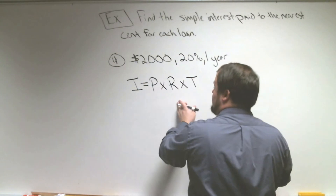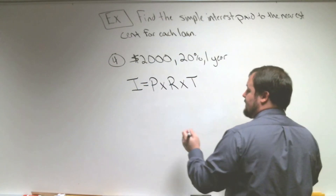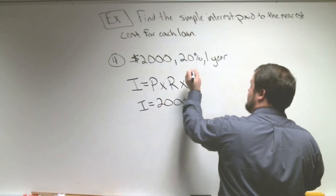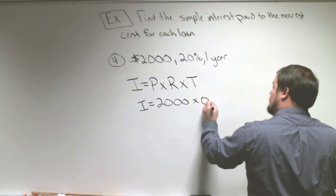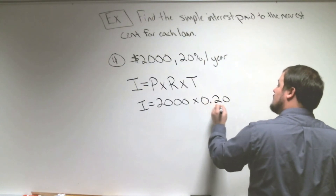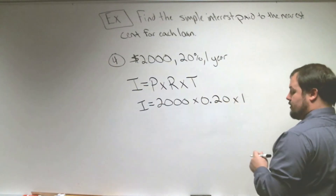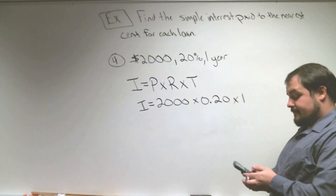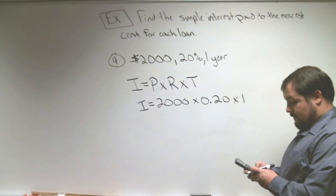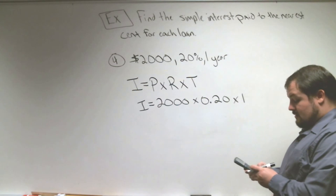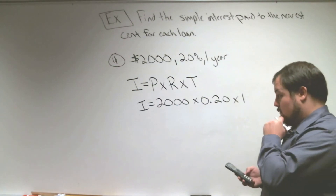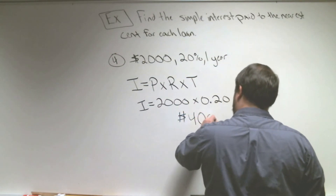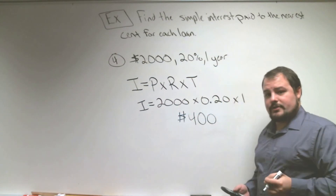We use the same formula: interest equals principal times rate times time. Interest equals $2,000 times 0.20 times 1 year. So we're going to figure out how much money we're going to pay the bank. That $2,000 loan at 20% for one year is going to cost us $400 in interest.